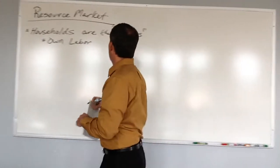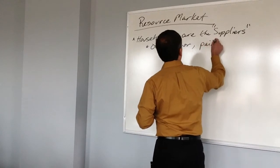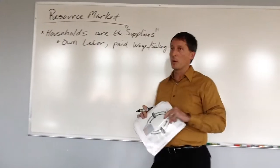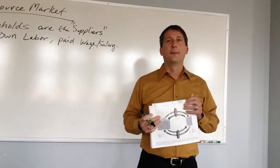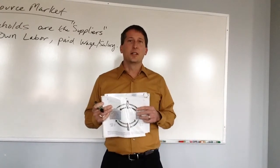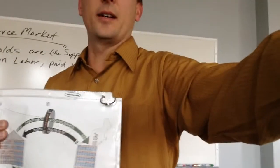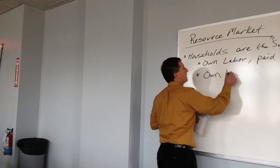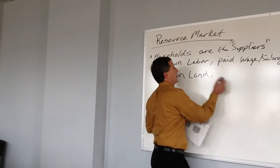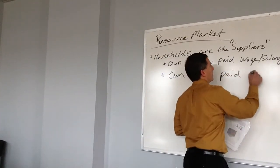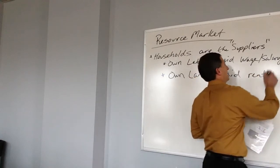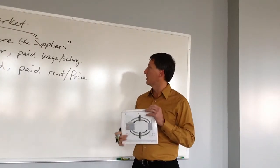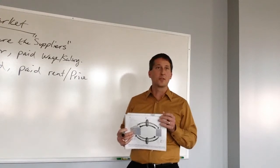Labor is paid a wage or a salary — we'll talk a lot about the wage rate per hour. What else do they own? Land. So households own land, and they might be paid rent on the land, or a price per acre, or the price per weight of gold, or something like that.